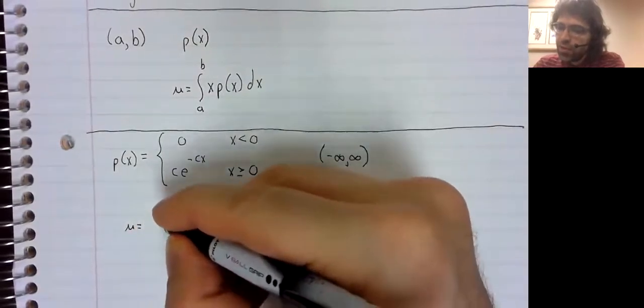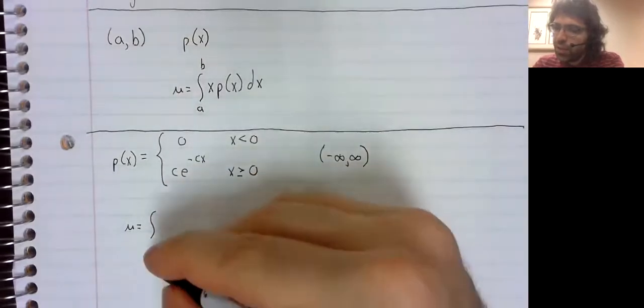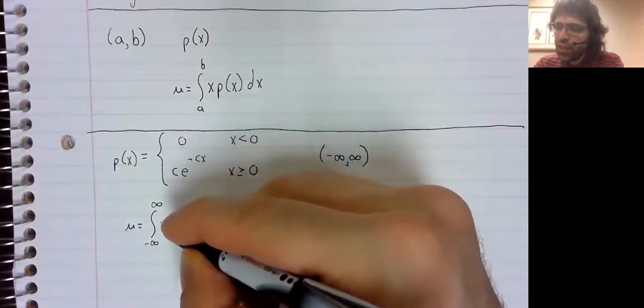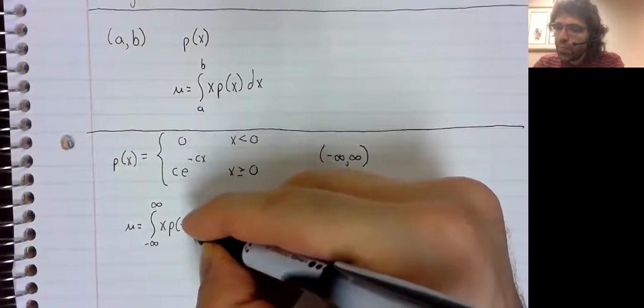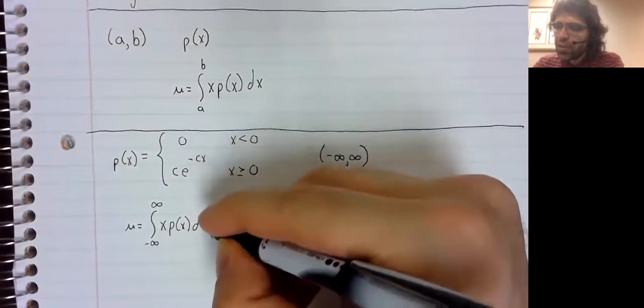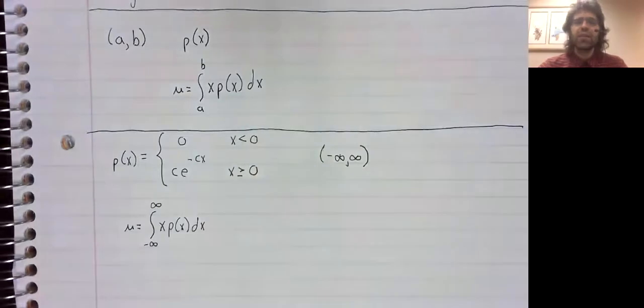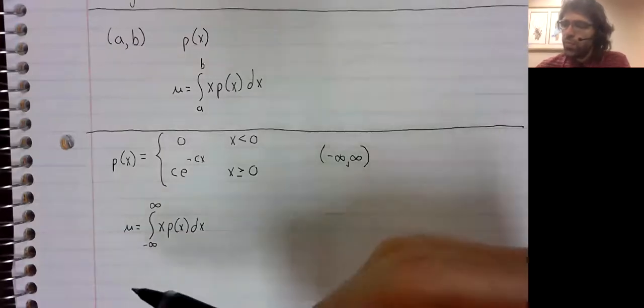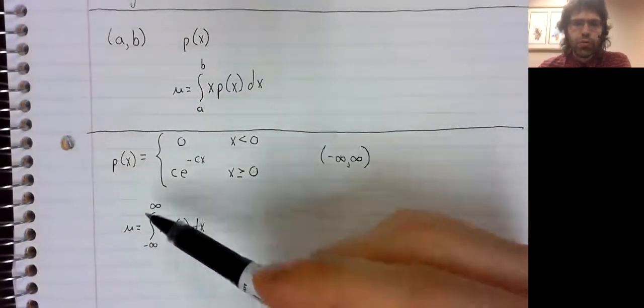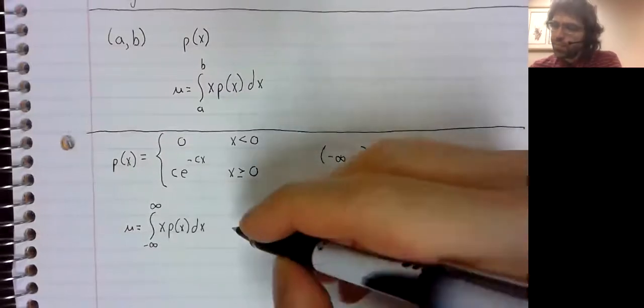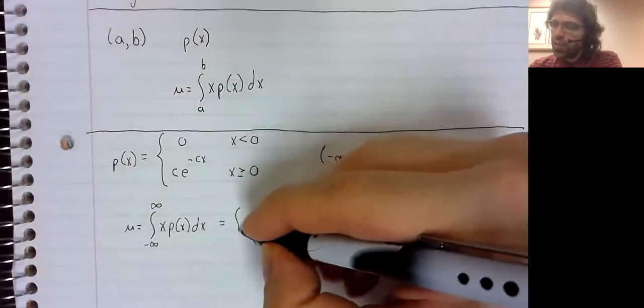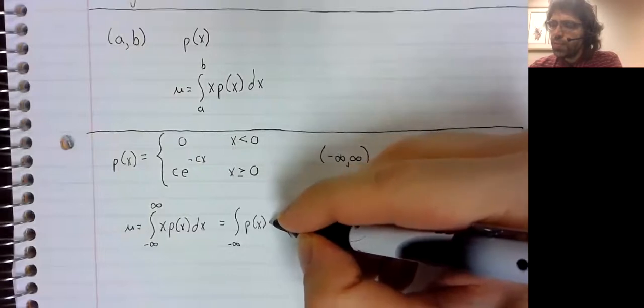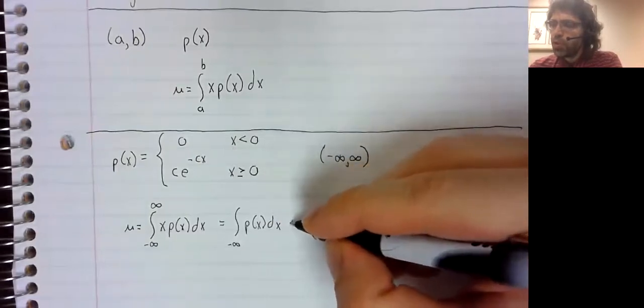So, according to this definition, the expected value should be the integral from negative infinity to positive infinity of x p of x dx. Now, an improper integral like this needs to be broken into two improper integrals.